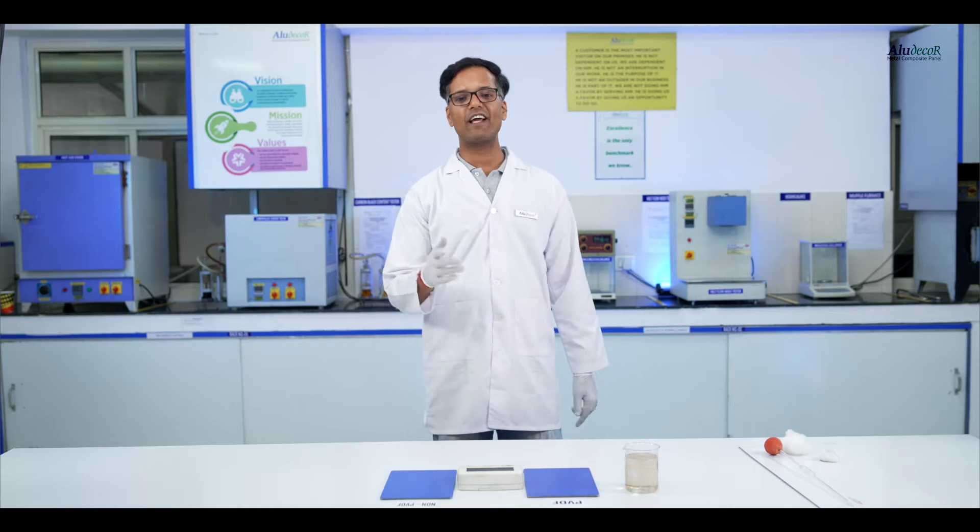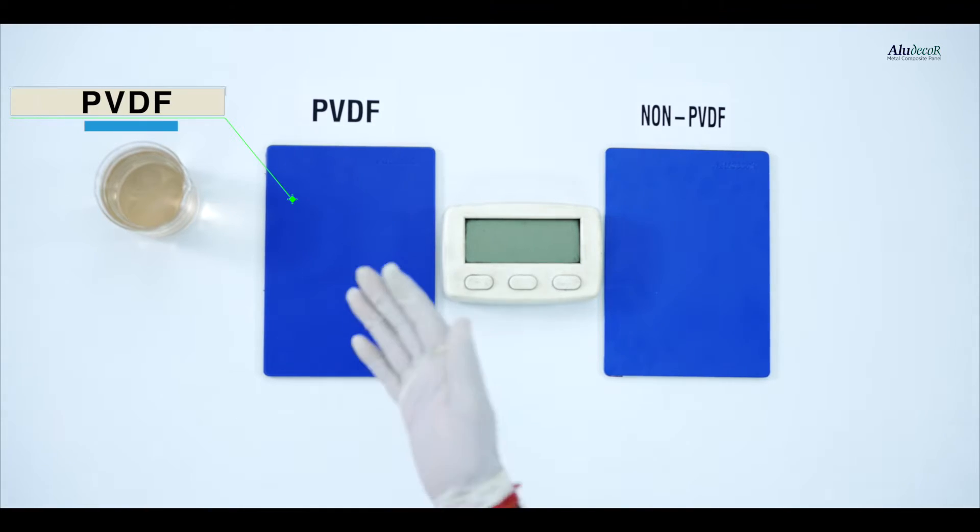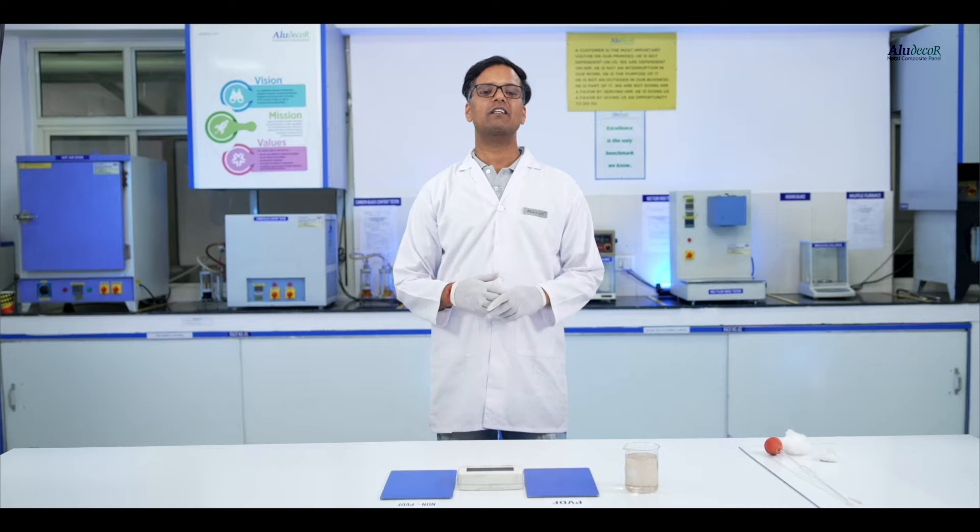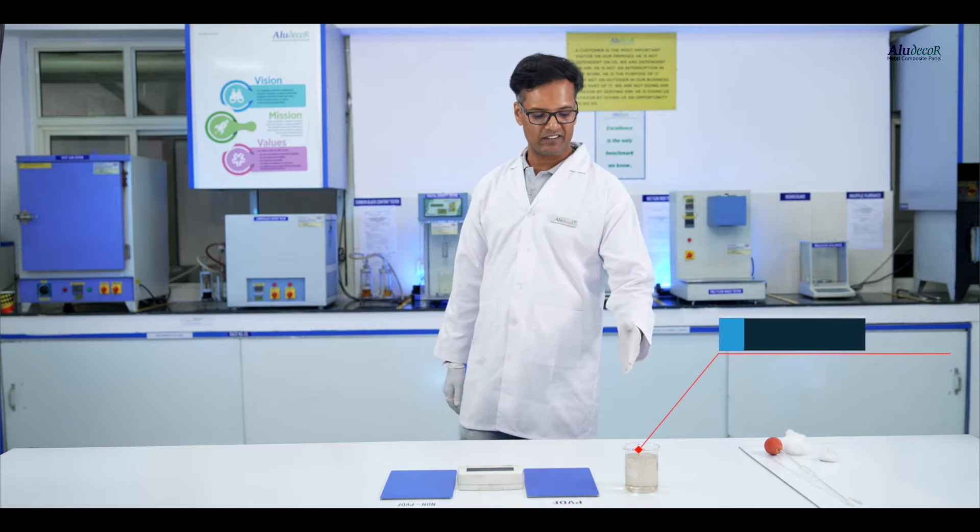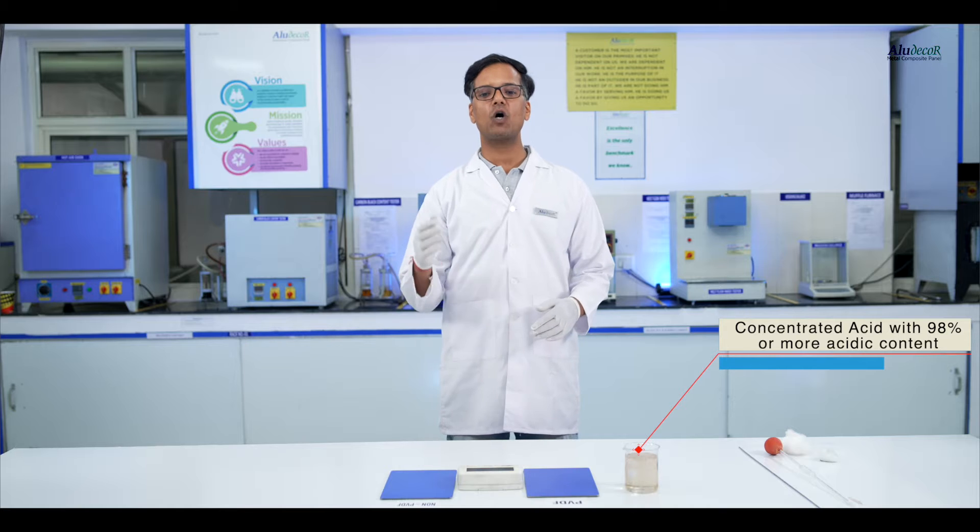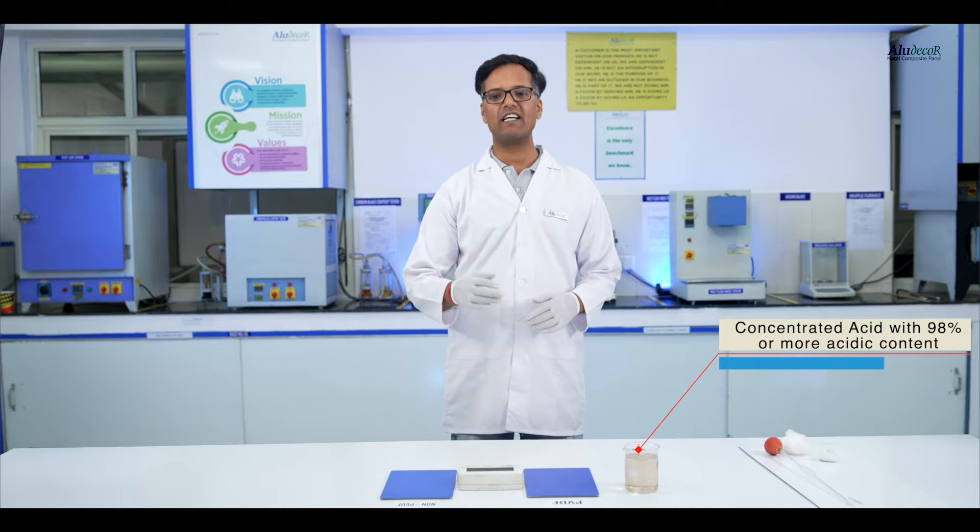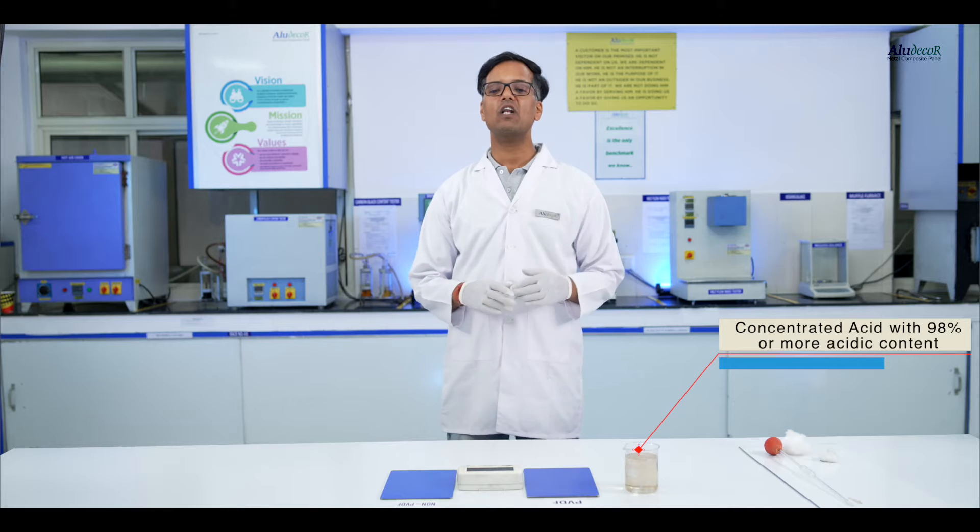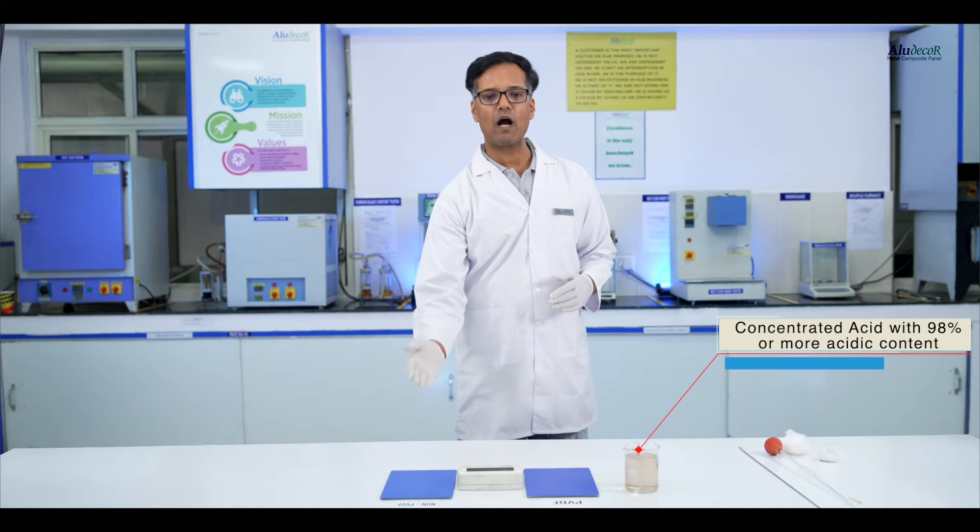So let's take two samples. One is PVDF and second one is non-PVDF. Now let's take highly concentrated acid, 98% or more acidic content, and we pour two drops of this chemical on each sample.